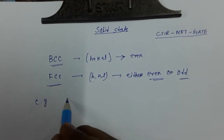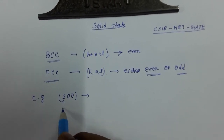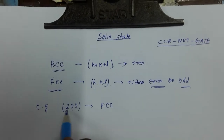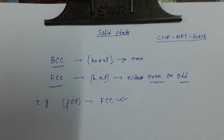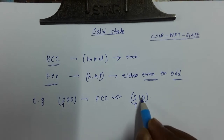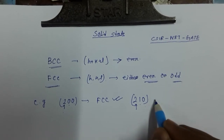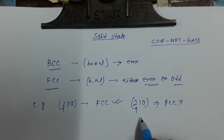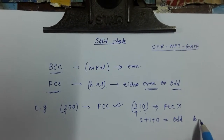For example, if we consider the (2 0 0) plane: 2 is even, 0 is even, and 0 is even — all are even, so it will be FCC. But if we consider the (2 1 0) plane, it is even, odd, and even — that is a mixture. The mixture cannot be FCC. And the sum 2 plus 1 plus 0 equals 3, which is odd, so it will not be BCC structure either.